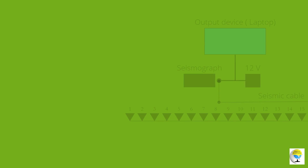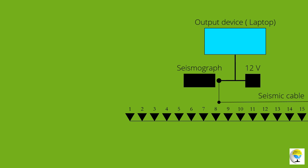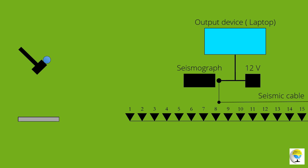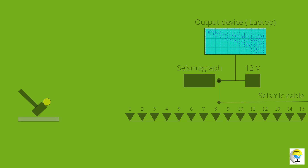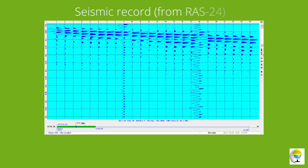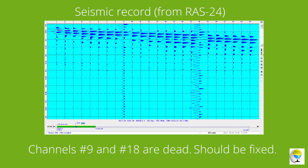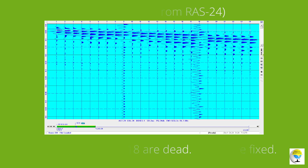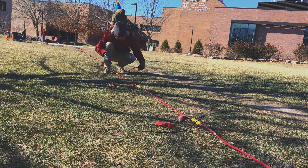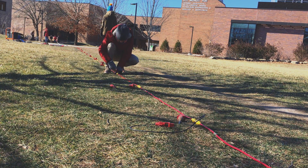MASW data are normally acquired by a two-person crew. When the acoustic source is discharged, the trigger attached to the sledgehammer initiates the seismic record and notifies the seismograph that the survey has begun. The operator evaluates the acquired data quality and gives the signal to the second crew member to proceed or check the geophone connections if necessary.